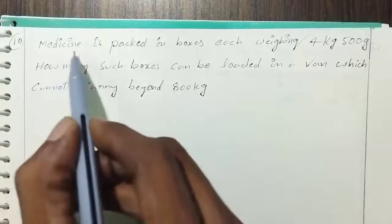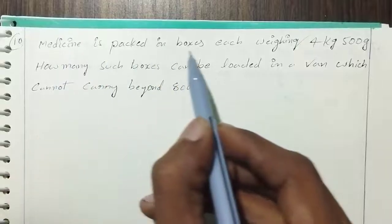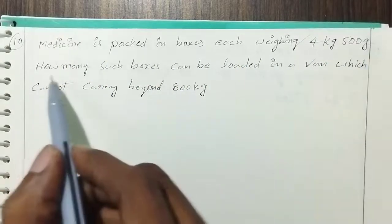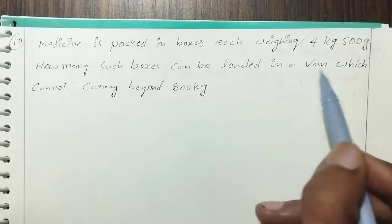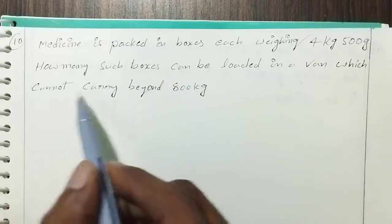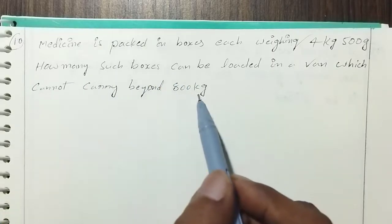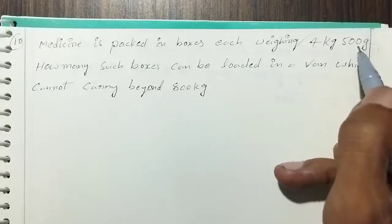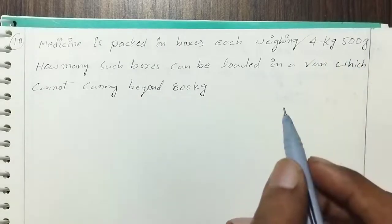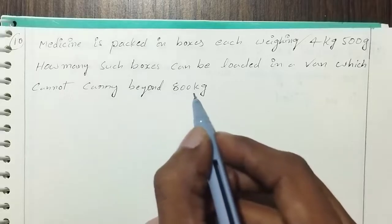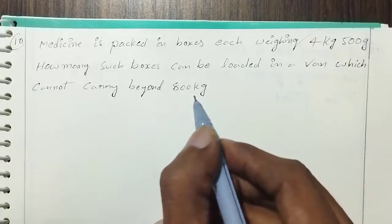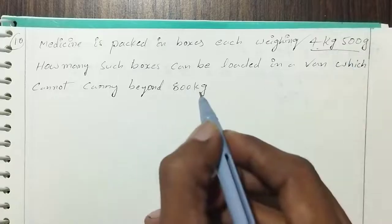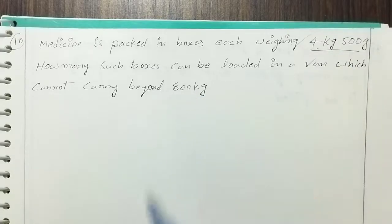Next problem: Medicine is packed in boxes, each weighing 4 kg 500 grams. How many such boxes can be loaded in a van which can carry 800 kg? We need to find how many 4 kg 500 g boxes fit into 800 kg.